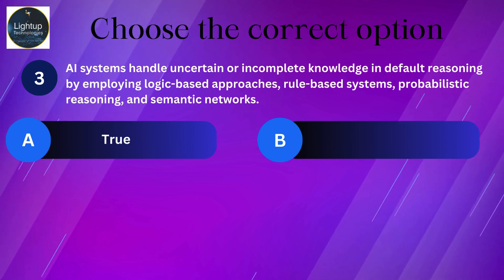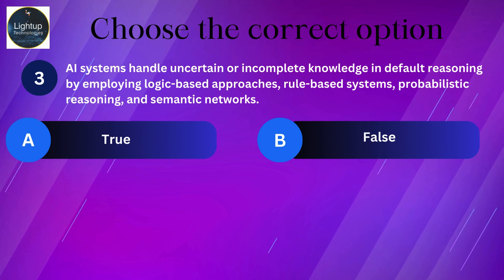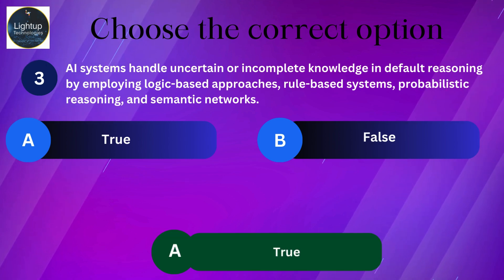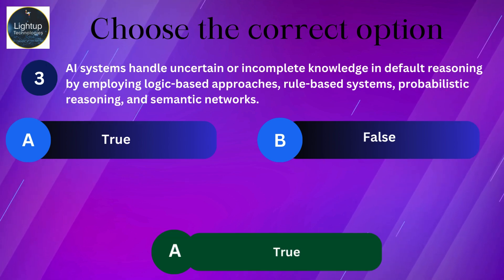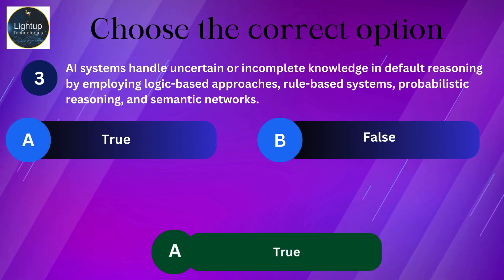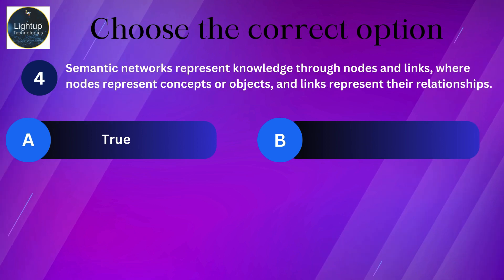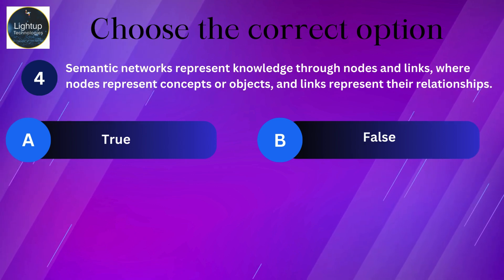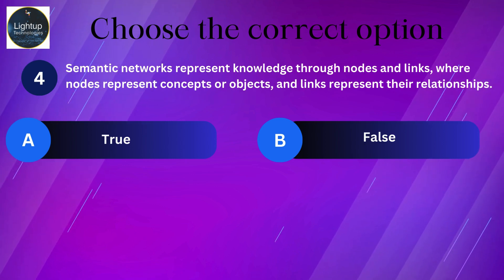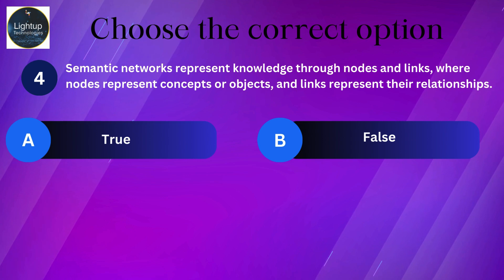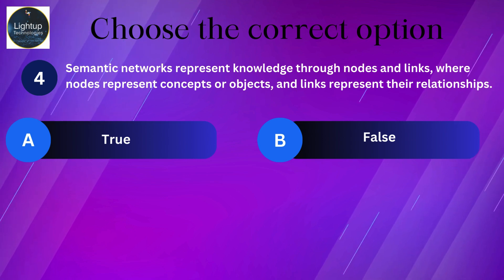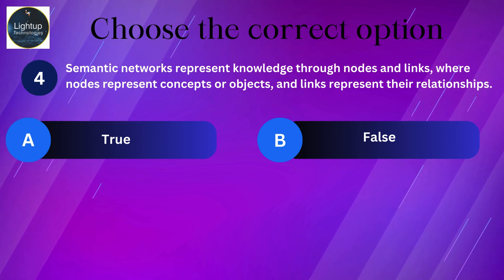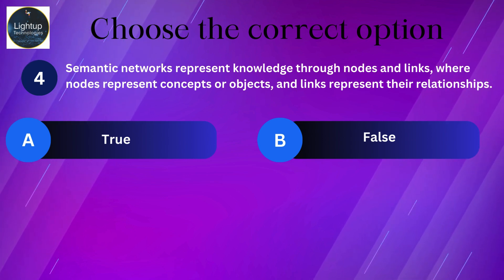Semantic networks represent knowledge through nodes and links, where nodes represent concepts or objects and links represent their relationships.